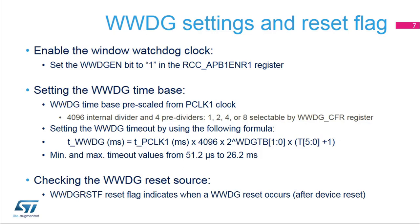The window watchdog timebase is pre-scaled from PCLK1 APB1, whose maximum frequency can go up to 80 MHz. This clock frequency is first pre-divided by 4096, and the window watchdog pre-scaler can divide it again by 1, 2, 4, or 8 as defined in the WWDG CFR register. The formula shown in the slide lets you determine the watchdog timeout, which is derived from the PCLK1 period and the WDGTB pre-scaler as well as the selected watchdog counter reload value. The minimum and maximum timeout values can be between 51.2 microseconds and 26.2 milliseconds.